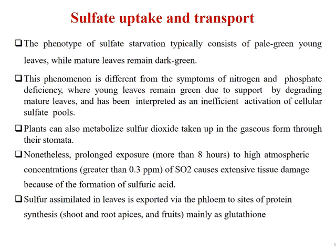The phenotype of sulfate starvation typically consists of pale green young leaves while mature leaves remain dark green. In nitrogen deficiency, old leaves become yellower; however, in sulfur deficiency, young leaves become pale green while mature leaves remain dark green. This phenomenon is different from the symptoms of nitrogen and phosphate deficiency, where young leaves remain green. This has been interpreted as an inefficient mobilization of cellular sulfate pools by degrading mature leaves.